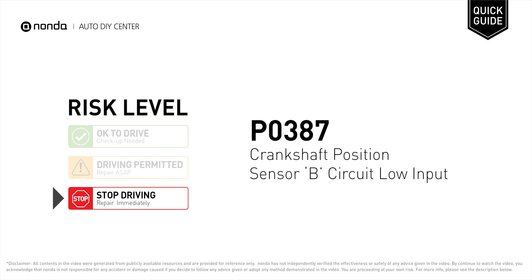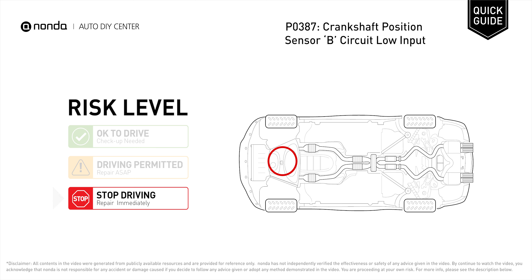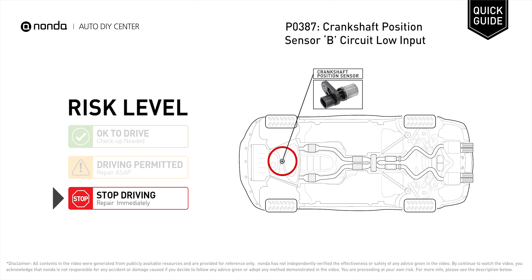P0387 is a diagnostic trouble code for crankshaft position sensor B circuit low input. Under this circumstance, stop driving and repair your vehicle immediately. P0387 means that the engine control module detected the engine crankshaft position sensor circuit is not within specifications.